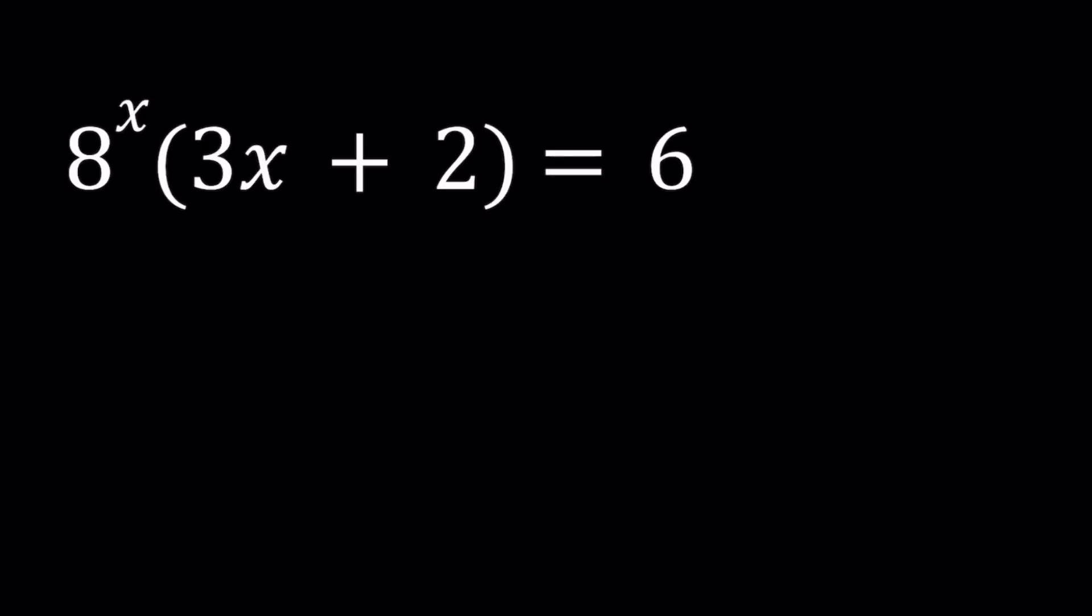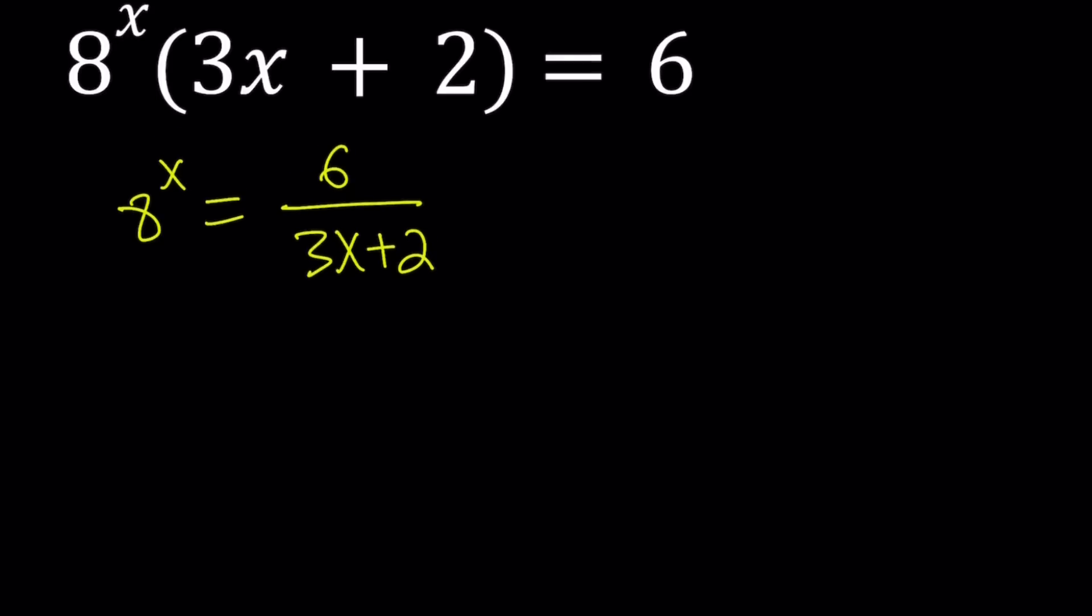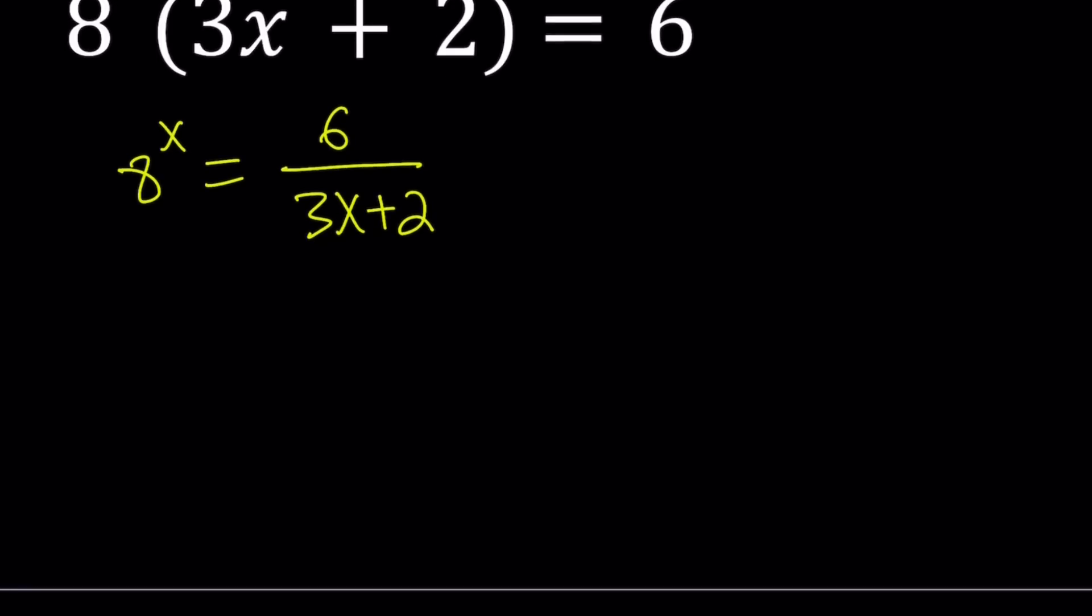So here's what I'm going to do. I'm going to put the 3x plus 2 on the right-hand side. I'm going to modify this equation, make it an exponential equals a rational function. You can easily change the form of an equation by division or multiplication. Now we have an exponential on the left-hand side and a rational equation on the right-hand side.